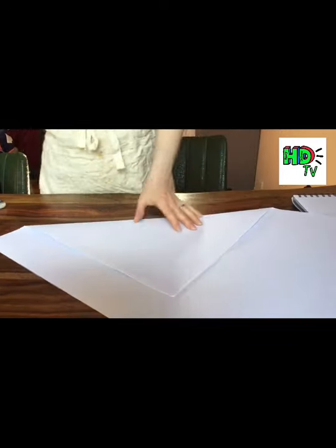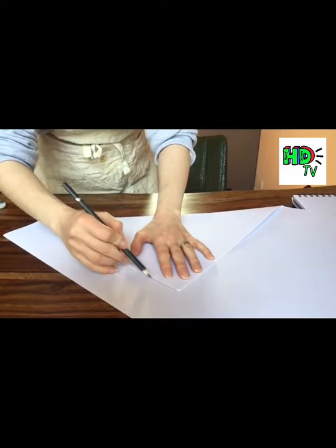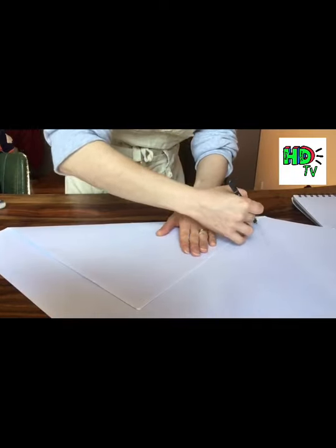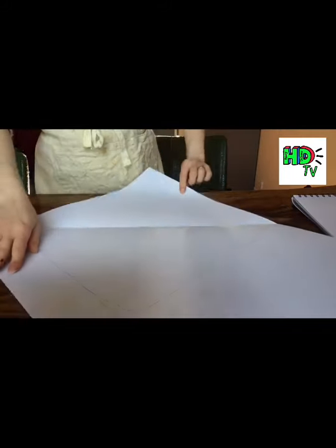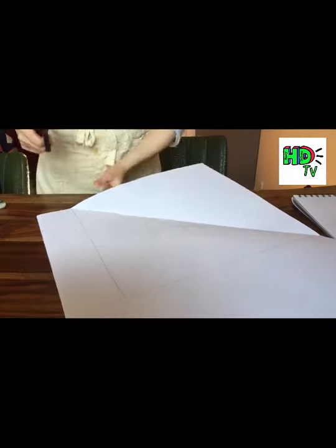Next I am going to take a pencil and draw along the edges of these lines of my triangle and when I unfold it I should have a lovely square which I am going to cut out with my scissors.